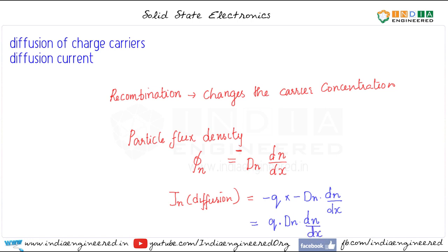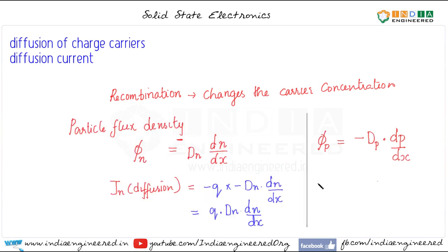Similarly, we can write for holes. The hole particle flux density we can denote using phi_p. That will be minus the constant D_p in the case of holes, which signifies that the diffusion coefficient of electrons is different from that of holes. They have different energies and tend to diffuse differently. The concentration gradient of holes is dp/dx. So j_p diffusion will equal, the charge of a hole is plus q, so plus q times minus D_p times dp/dx.